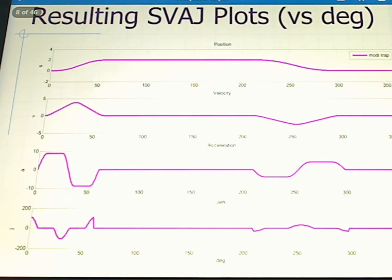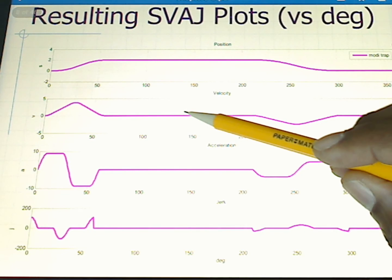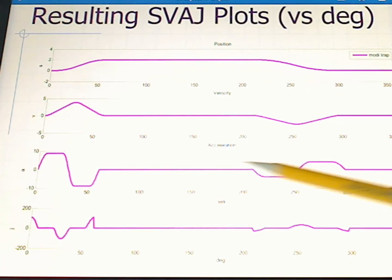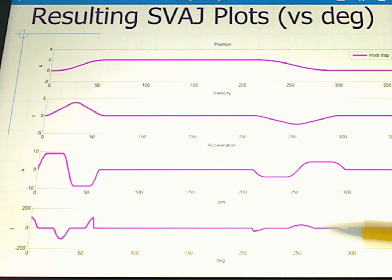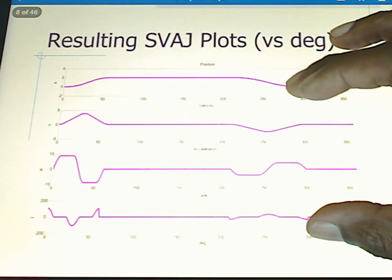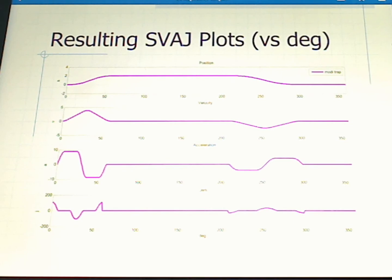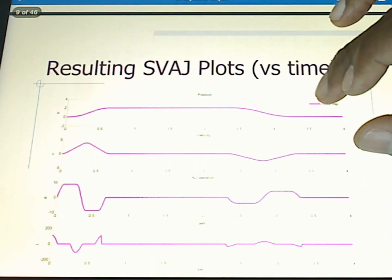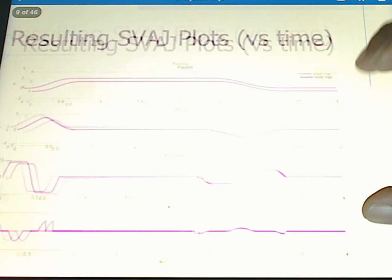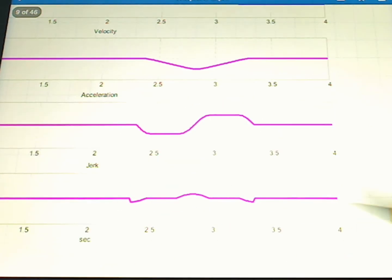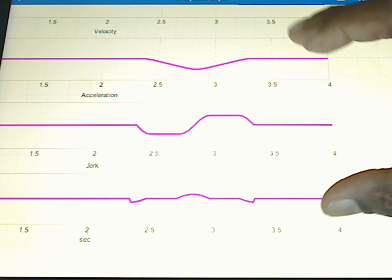We can also see the other curves plotted. We have a velocity curve here, we have our acceleration curve, and we have our jerk curve. All of them have been plotted as a function of degrees. We can also do the same in terms of plotting with respect to time. Here we see the same curves. Notice they end at four seconds, because that's how long the cycle was supposed to be.